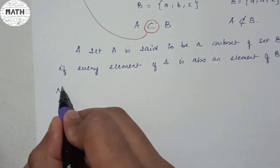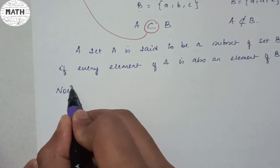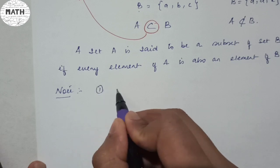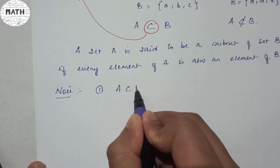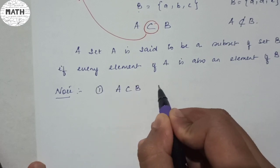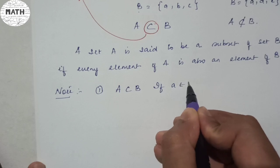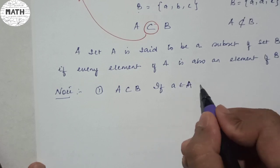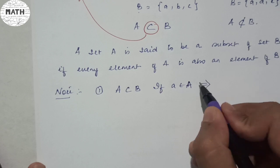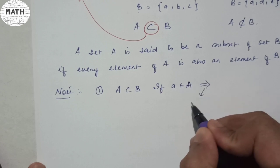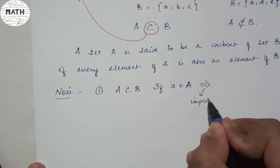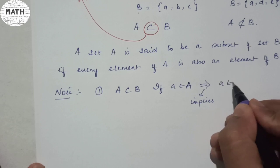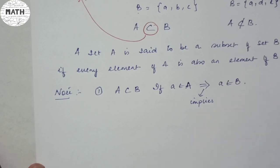In this subset, there are some important points which come under note. The first point: suppose A is a subset of B, and if 'a' belongs to A — this sign means 'implies' — then your 'a' should also belong to B.